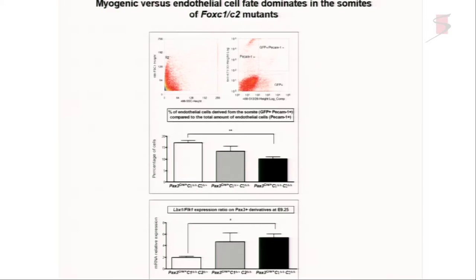We bred these conditional mutants into a Rosa-tomato reporter mouse. Under Pax3-Cre, we could sort the cells of interest from somites at the stage when they should be moving out to the limb. We looked at the percentage of endothelial cells derived from the somite, marked by PECAM. As we knocked down FoxC2, we decreased the number of PECAM-positive cells. Looking at the ratio of LBX1 — our early myogenic marker — against FLI1, the early endothelial marker, we increased the proportion of LBX1-positive myogenic progenitor cells as we knock down FoxC. So all that was expected, but nevertheless these cells had not moved out as they should into the limb.